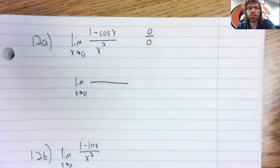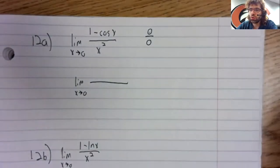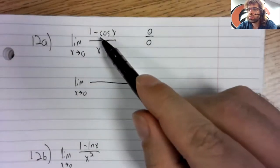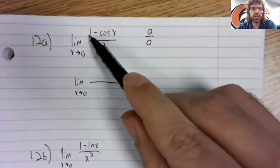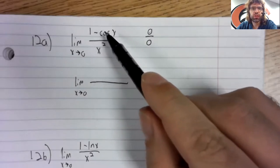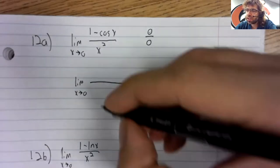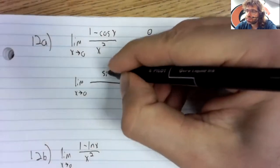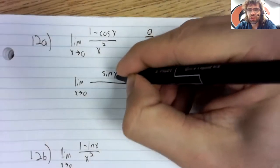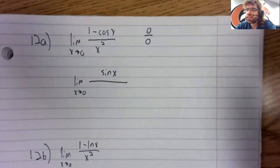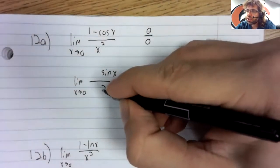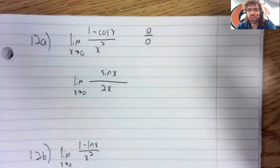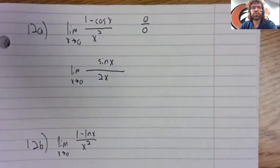We apply L'Hopital's rule. So the derivative of one is zero. The derivative of the cosine is the negative sine. In the denominator, the derivative of x squared is 2x.